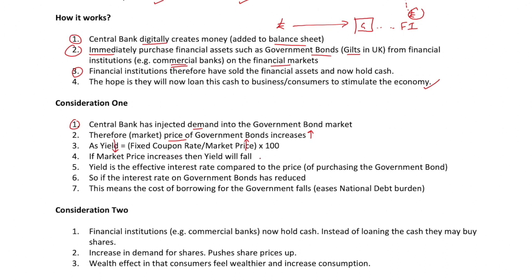So market prices go up due to extra demand from the central bank, which leads to yields falling. The yield is just the effective interest rate relative to the price of purchasing the government bond — the return an investor looks for when buying gilts. If the interest rate on government bonds has reduced, that's effectively the cost of borrowing for the government falling. A potential advantage here is that it could ease the national debt burden because it's cheaper to finance that government debt.